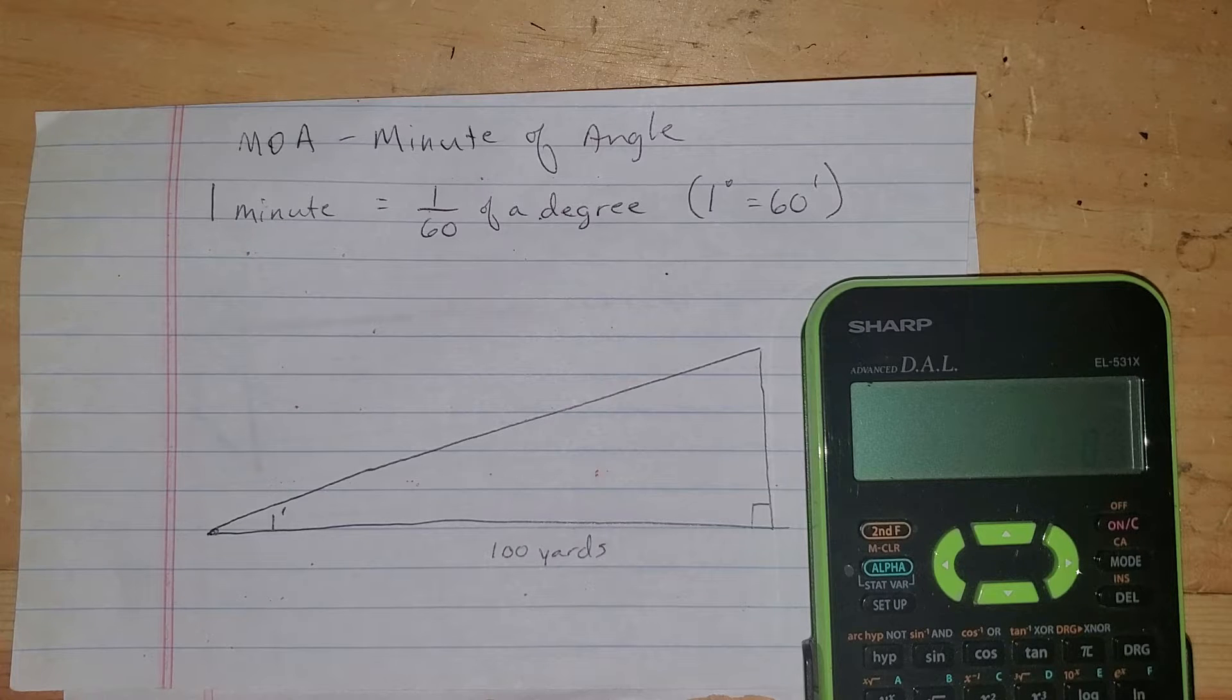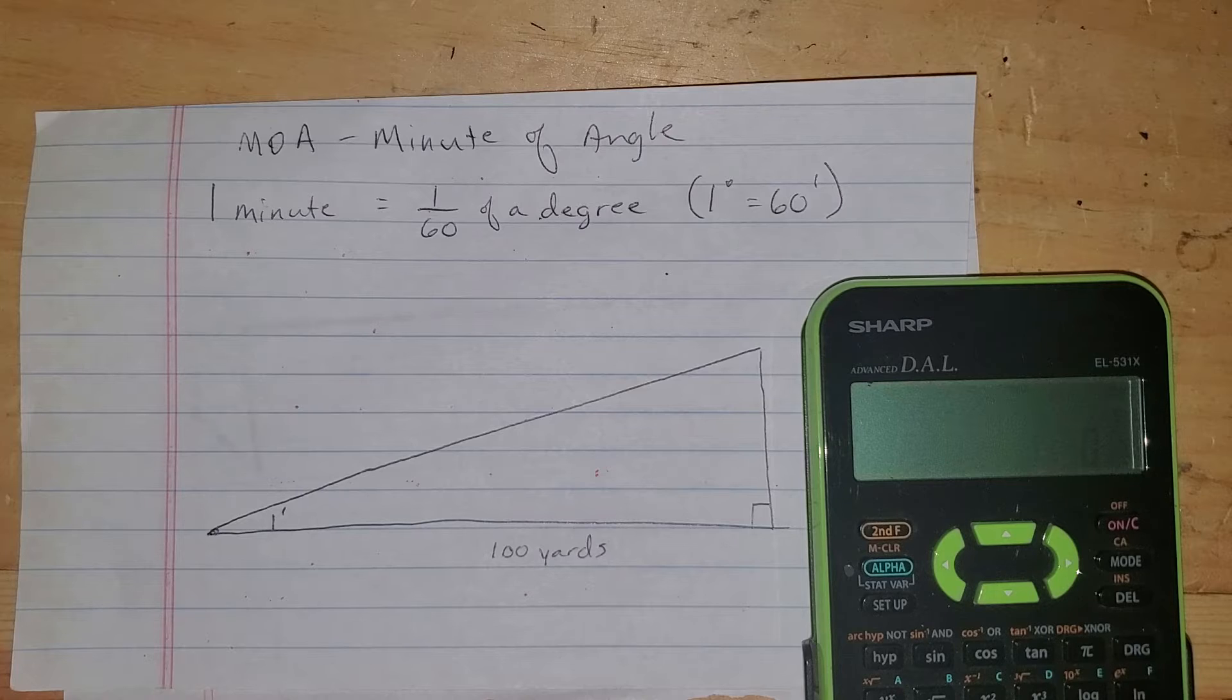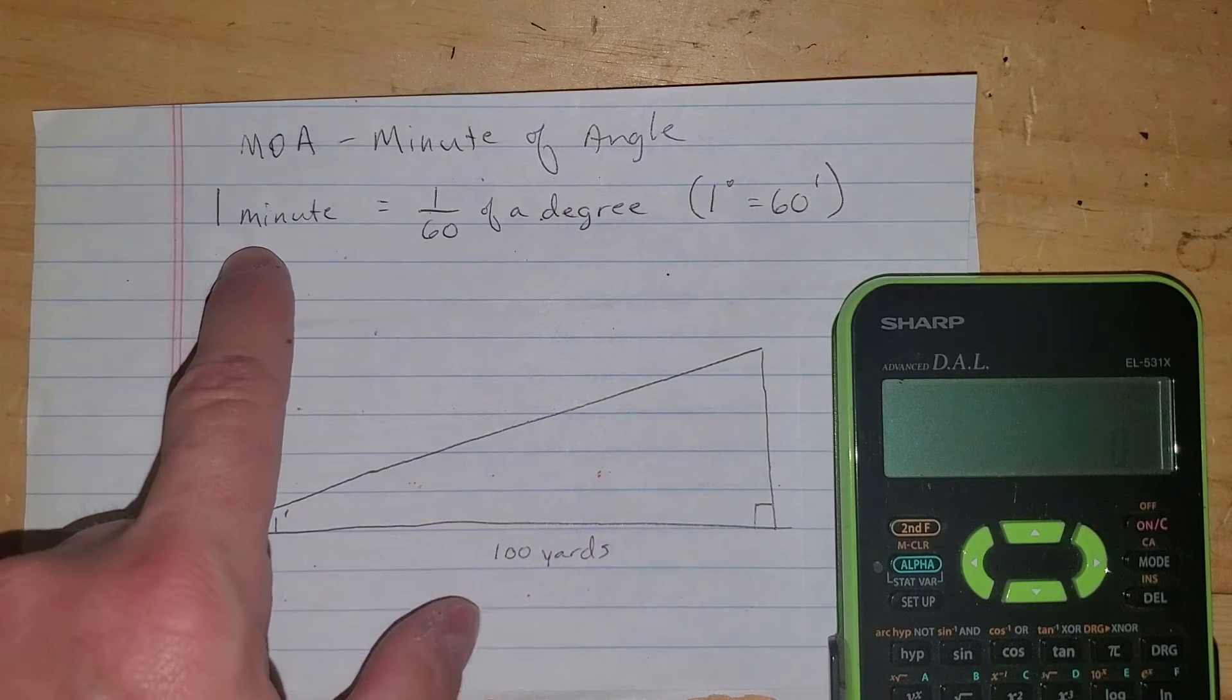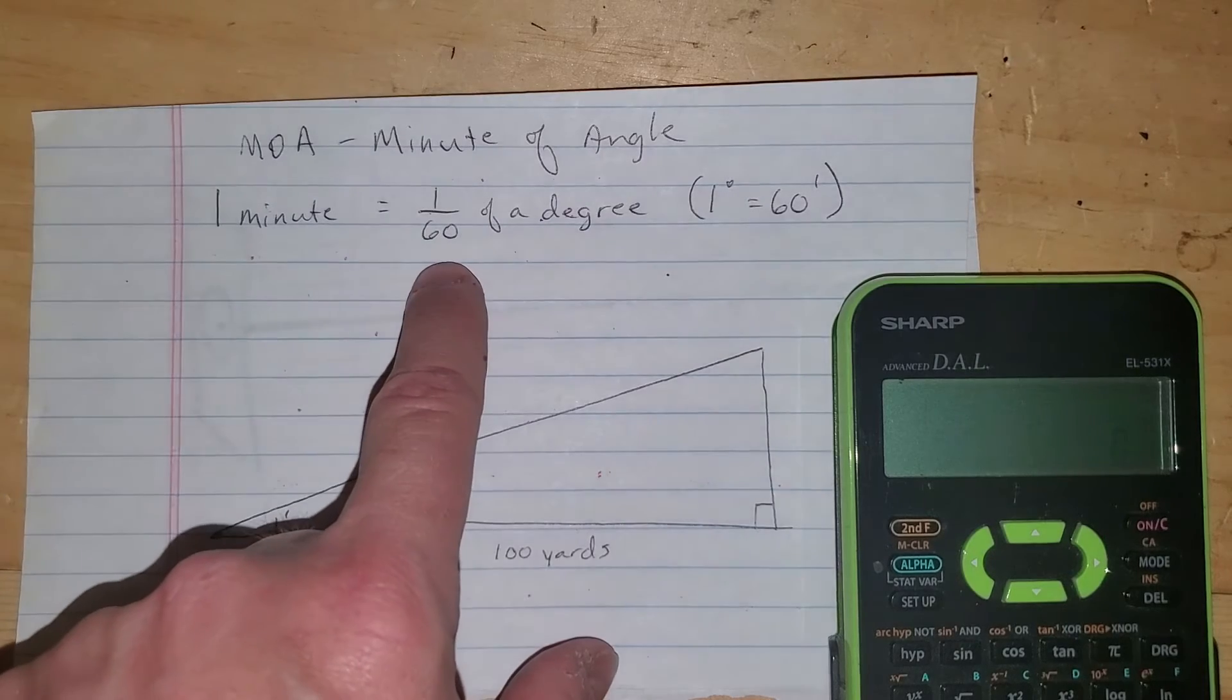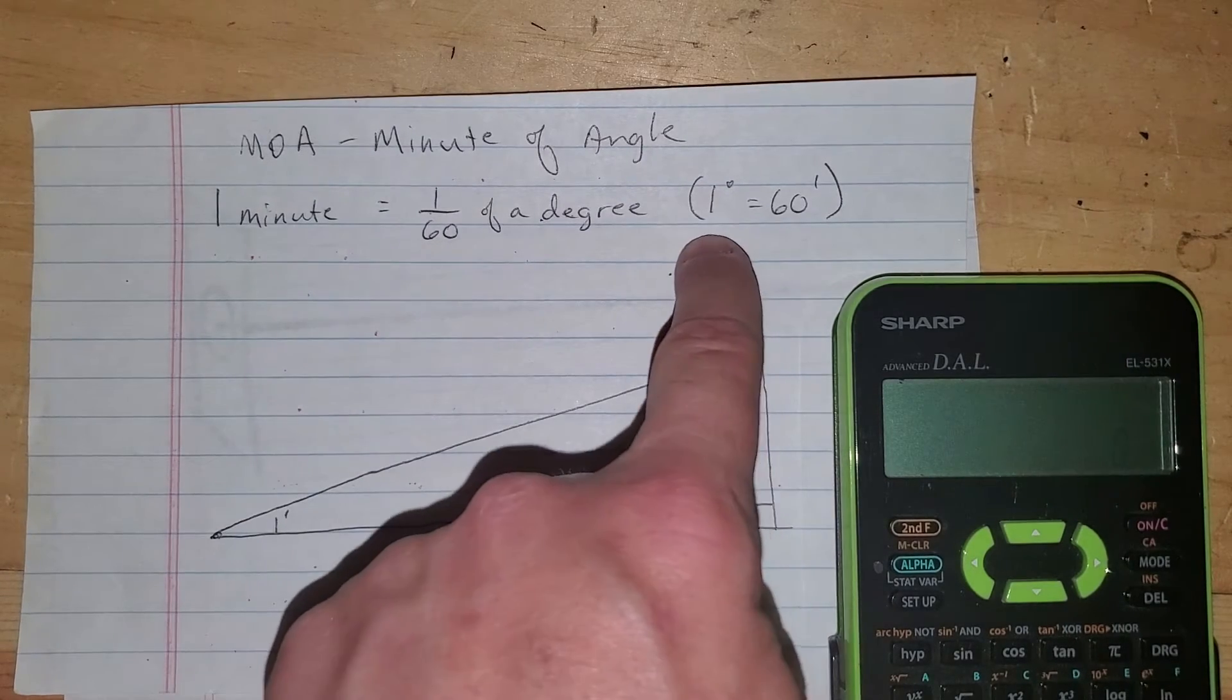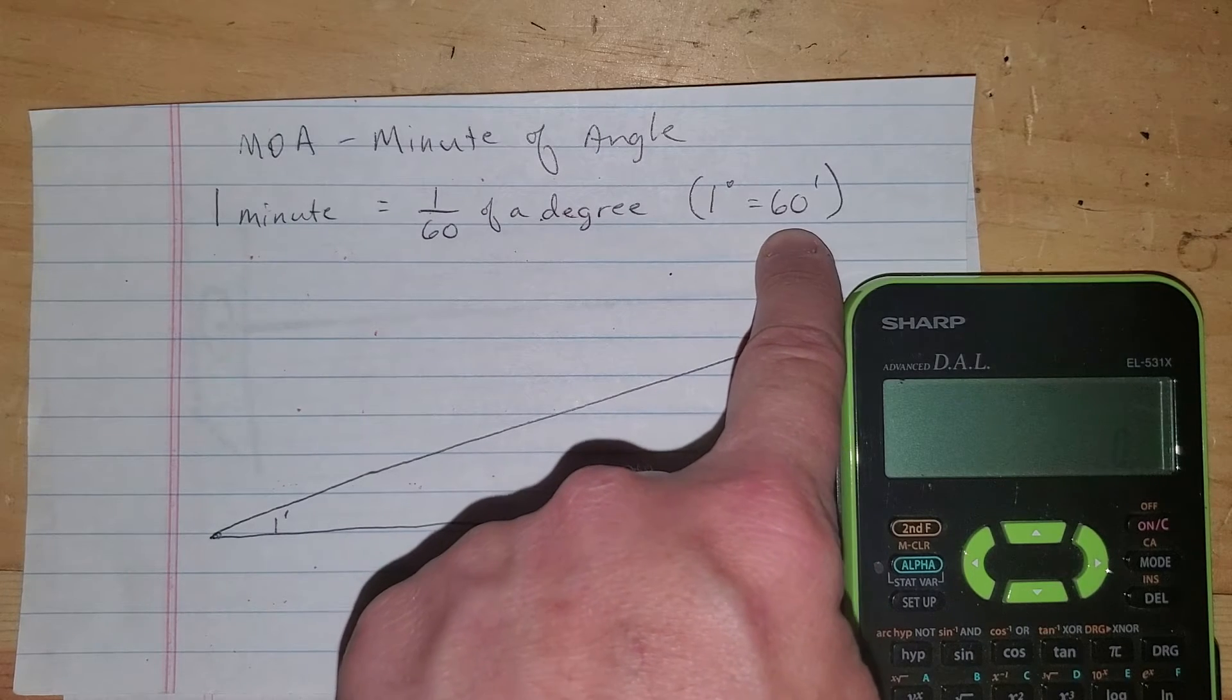So this is a measurement, and I find a lot of people sort of kind of know this, but they don't really know it. So MOA is minute of an angle, and one minute is one-sixtieth of a degree, or another way of saying that is one degree is equal to 60 minutes.